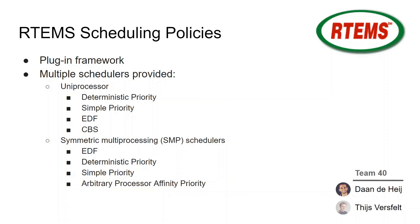Which scheduling policies are included in RTEMS and how were they implemented? RTEMS uses a plugin framework for the implementation of scheduling algorithms. One benefit is that the user can select desired scheduling algorithms at link time. Another benefit is that users can implement their own scheduling algorithms and use these in RTEMS. RTEMS includes a variety of schedulers, some uniprocessor and some SMP, and the ones included can be seen on this slide.